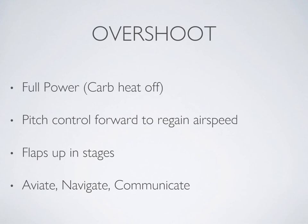The overshoot process is quite simple but will be practiced a couple of times just to make it instinctual. Step one is always full power and carb heat off. Step two is keep forward pressure on the control and prevent the nose from popping up — that could put you into an overshoot stall. Keep forward pressure on the control column until you have enough airspeed, then pitch the nose up to climb speed and bring the flaps up in stages.